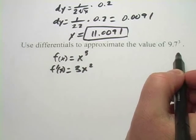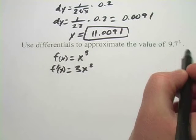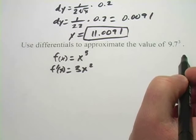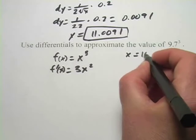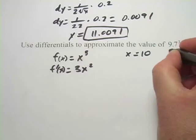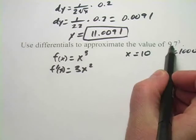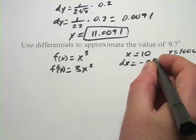Now, what is our x value, and what is our change in x? 9.7, I don't know how to cube that in my head, but 10 cubed is pretty easy. 10 cubed is 1,000, so let's say x equals 10, which means y would equal 1,000. And our change in x here, our dx, is a negative 0.3.